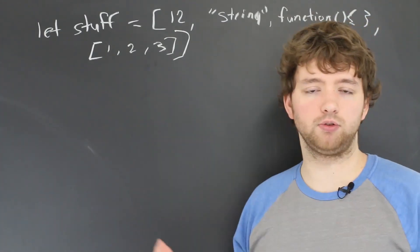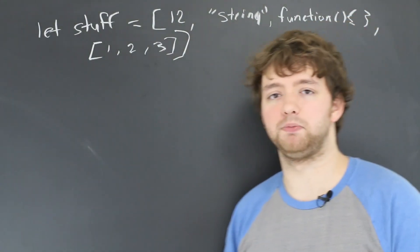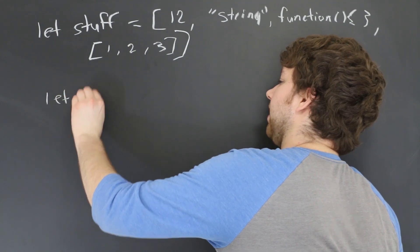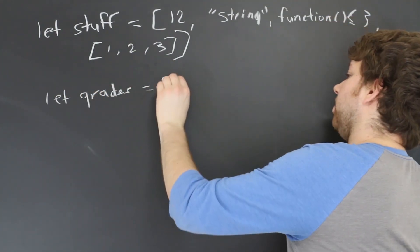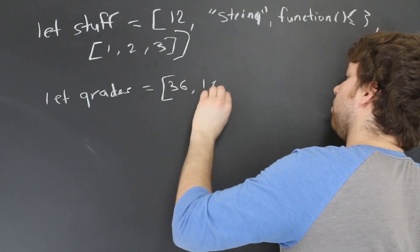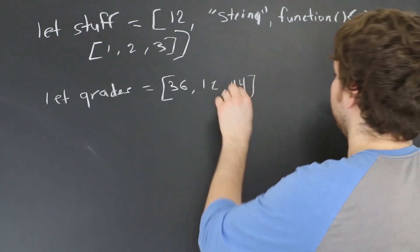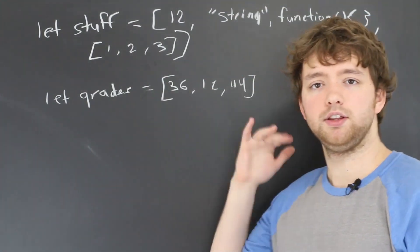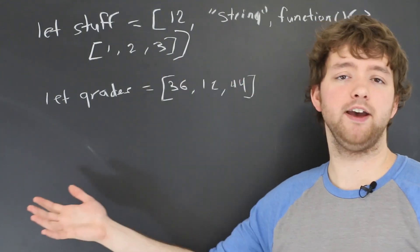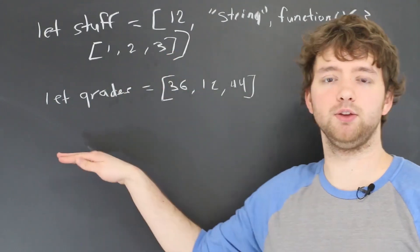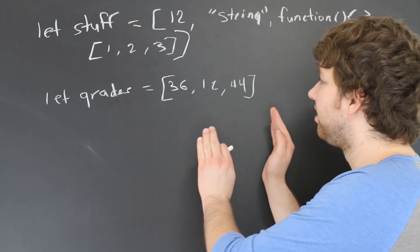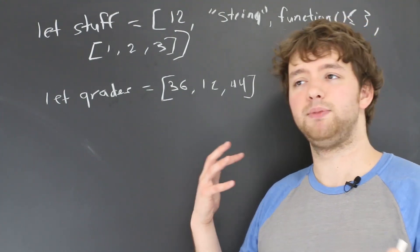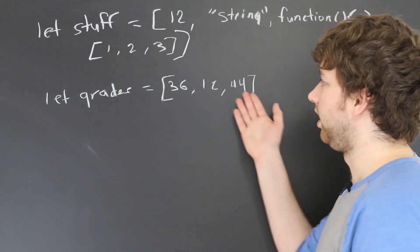A better way to use multi-dimensional arrays is to think of a table. A common example is a grade system. If we wanted a single array, we might have something like 'let grades' with some grade percentages — 36%, 12%, 44% — my typical high school grades. These grades might represent grades on a test, but whose grades are they? If you wanted grades for multiple people, you'd need multiple variables — grades for Caleb, grades for Claire. But that's not ideal because we don't want to hard-code variables; it's not easy to make things dynamic and we're not storing data in a proper data structure.